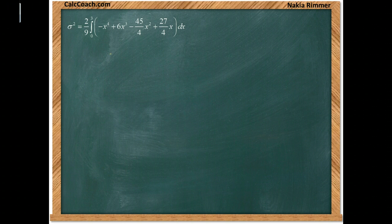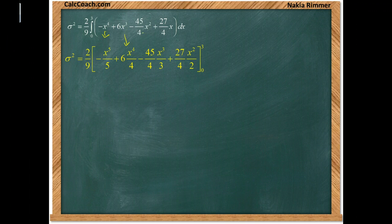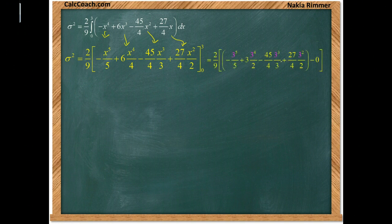Okay antiderivative so we're going to get negative x to the fifth over 5, 6x to the fourth over 4, negative 45x cubed over 3, 27 over 4 x squared over 2, evaluated from 0 to 3. This is not an improper integral. So we'll just put a 3 in and we'll just put a 0 in. 0 will give us 0. If we put a 3 in we'll be left with this.